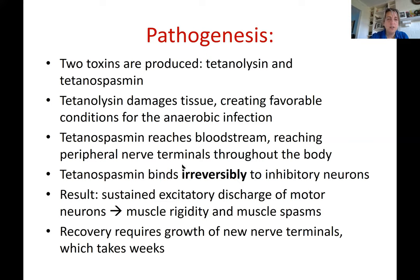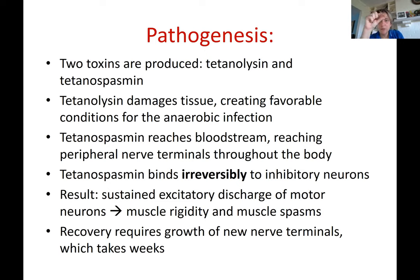Because the toxin binds irreversibly to inhibitory neurons, the result is sustained excitatory discharge of motor neurons, leading to muscle rigidity and muscle spasms. The inhibitory neurons are responsible for moderating the force and distance of muscle contractions — for example, deciding how much force you need to grab an object.